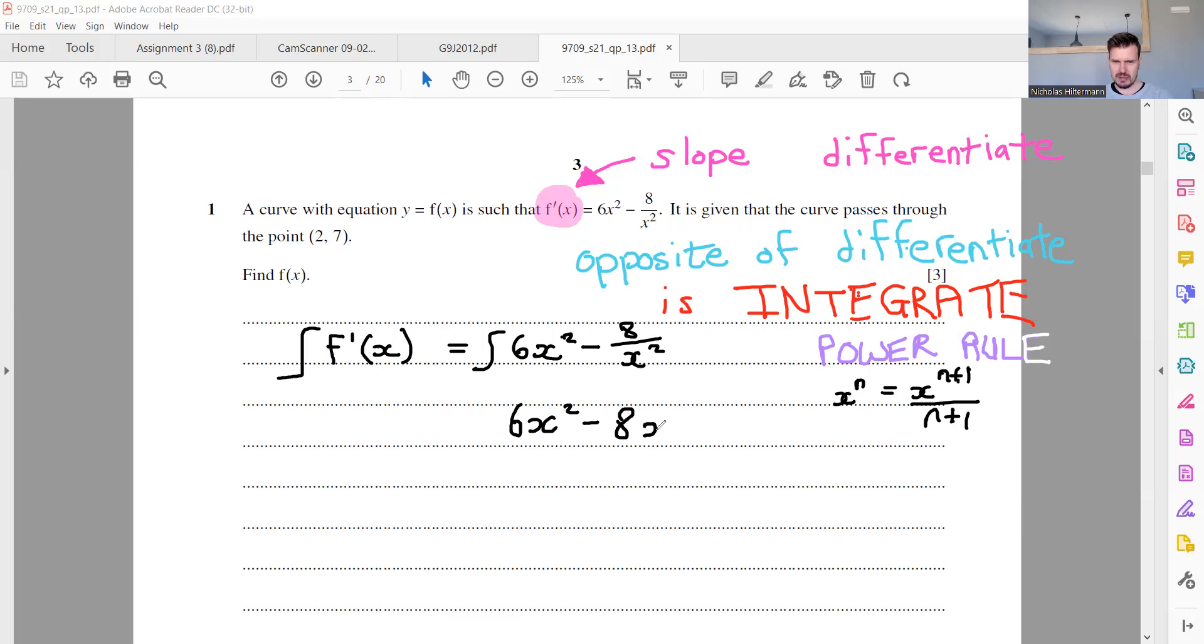And so we have x. And what happens when 2 goes to the top? It changes to minus 2. Okay, so whenever an exponent jumps up or down, it changes the sign. Okay, so that's what's happened there. And we should all know this from our GCSEs.